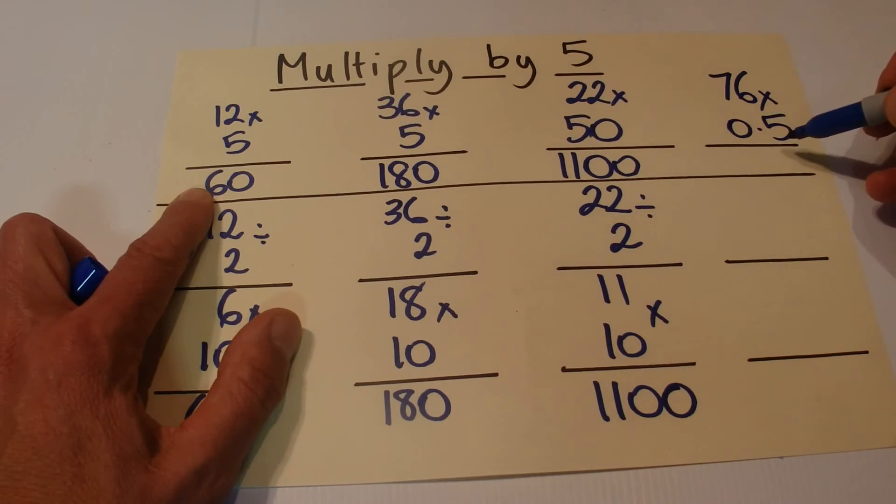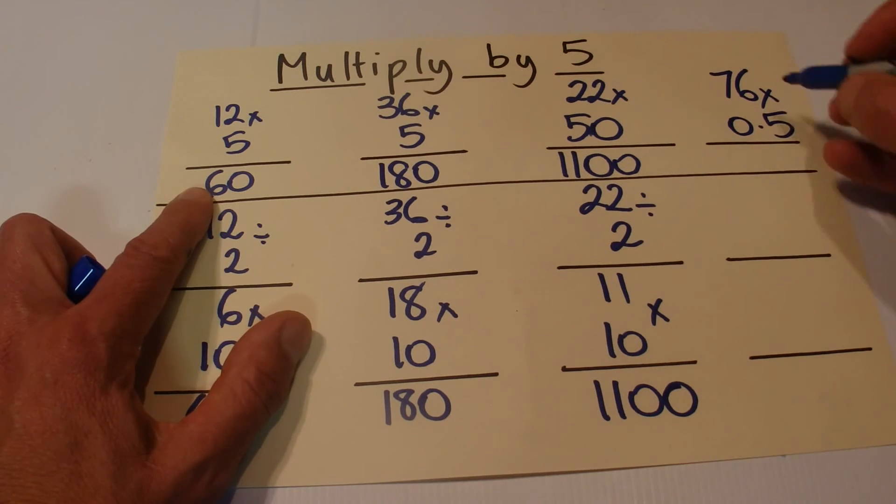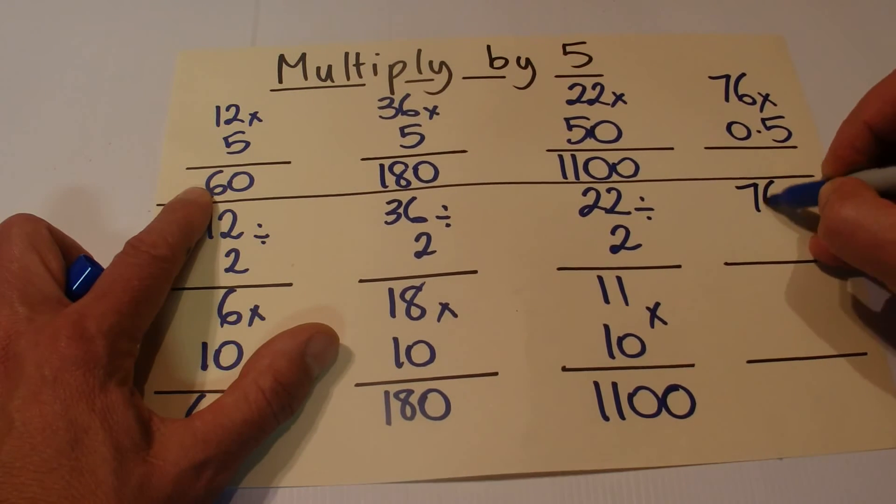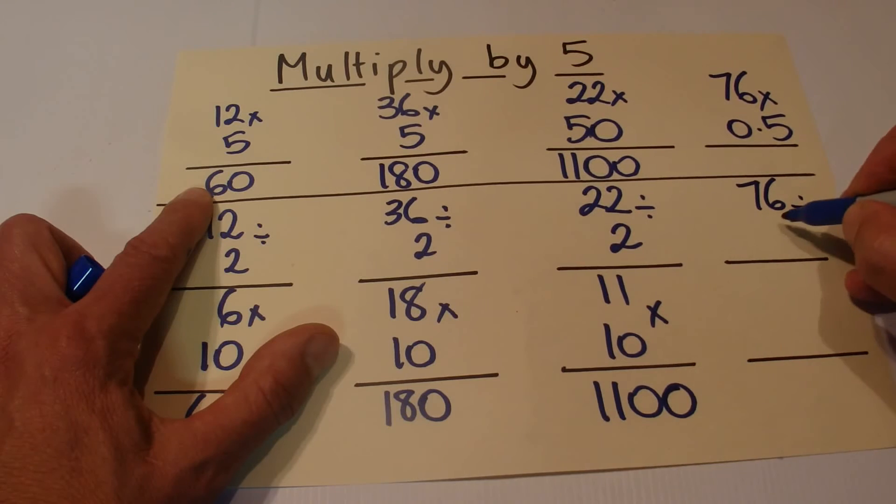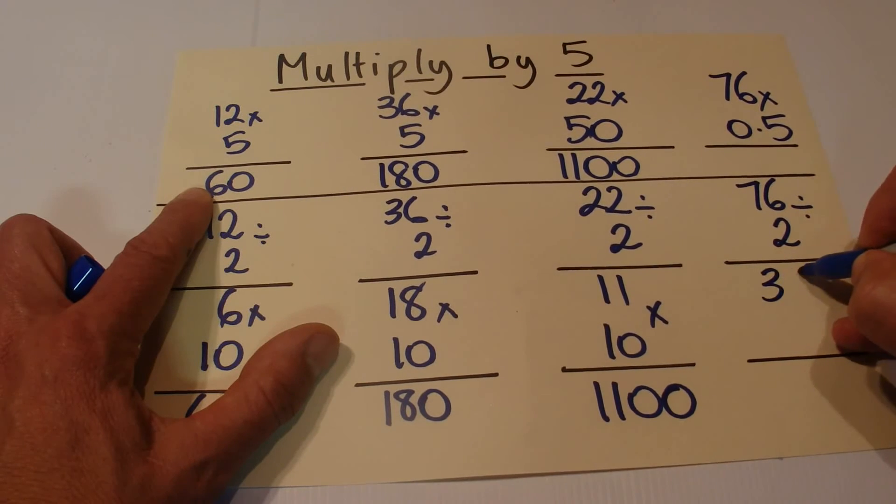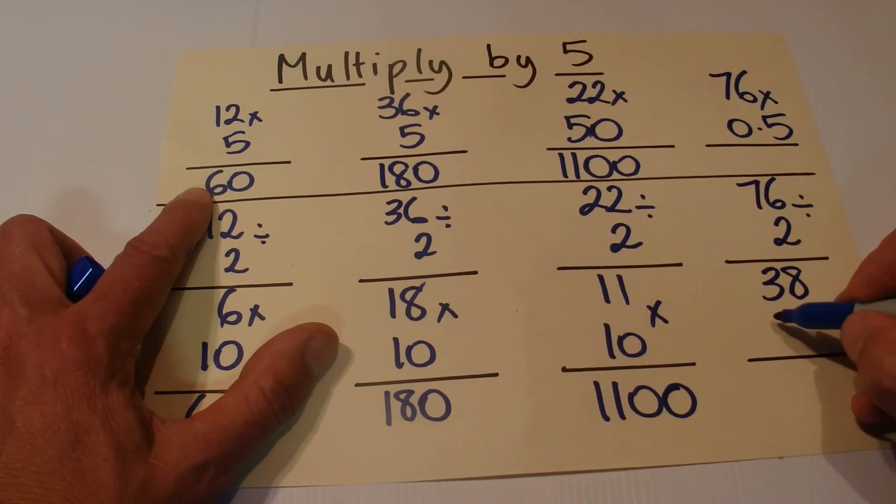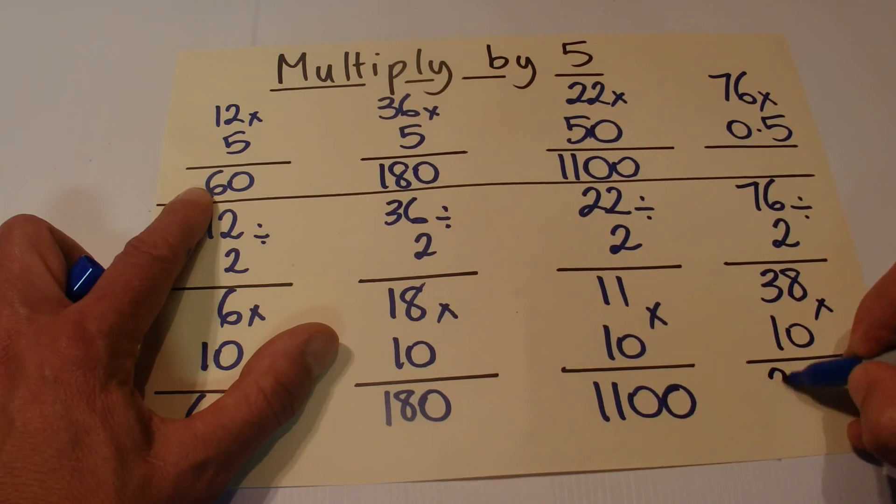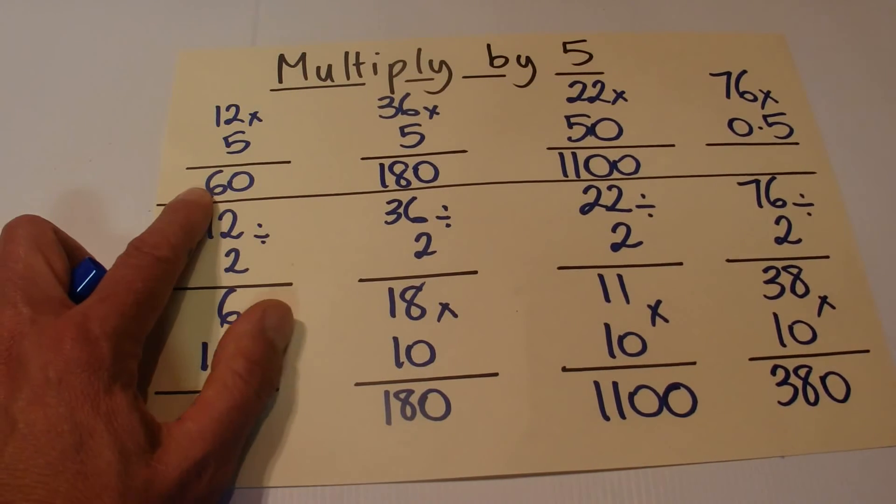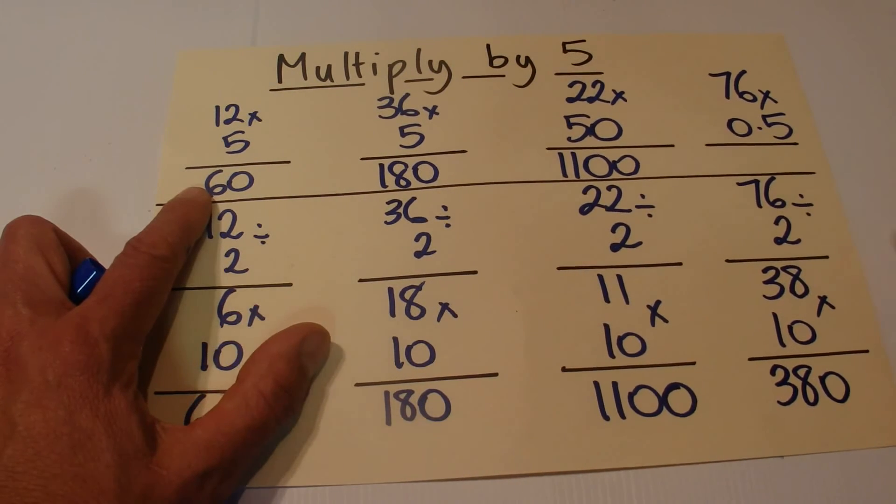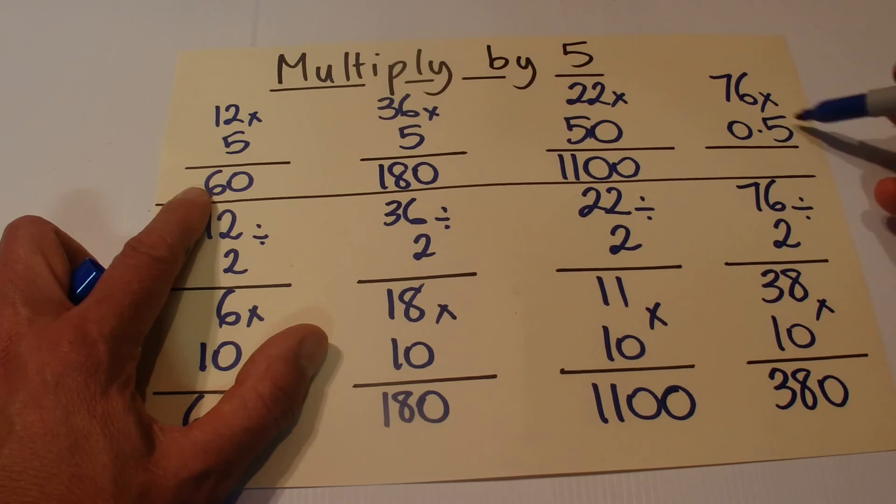The same principle applies if you want to multiply by 0.5. So it's 76 times 0.5. We take half of 76, which is 38, we multiply that by 10 and we come up with 380. Because it's 0.5, the decimal point is in one space from the right.